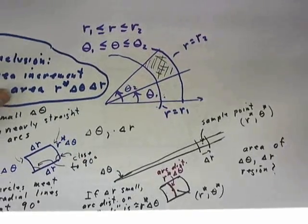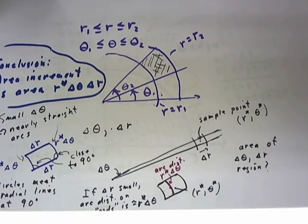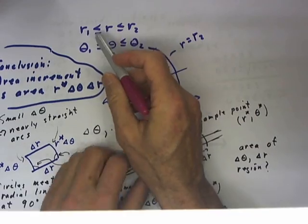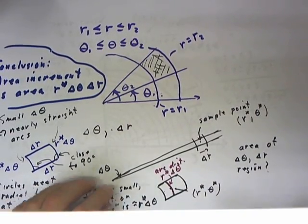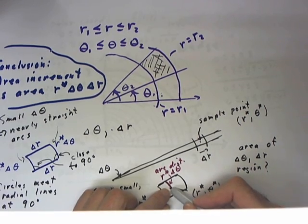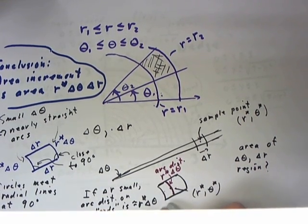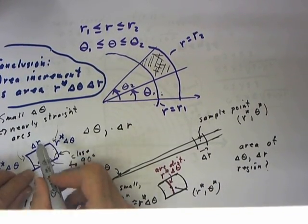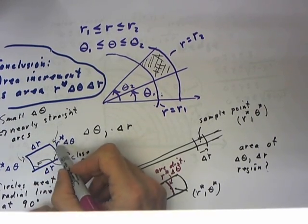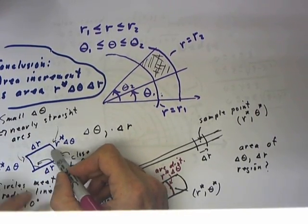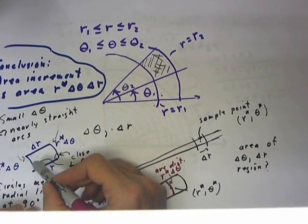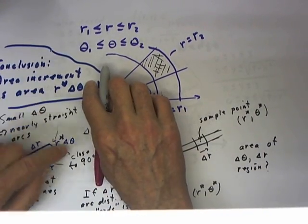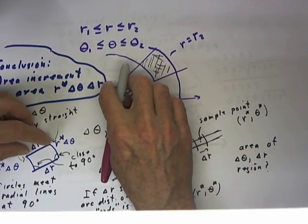We can recall from previous discussion that the area of an interval defined in polar coordinates between two values of r and two values of theta depends on the r value at the sample point as well as the delta theta and delta r. The delta r is this dimension of our interval, and the r* delta theta, where r* is our sample value of r, determines the lengths of these two sides, giving us an approximate rectangle whose area is r* delta theta, this dimension, multiplied by delta r, this dimension.